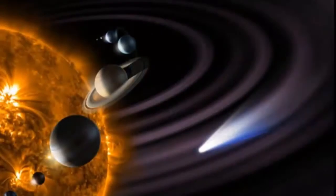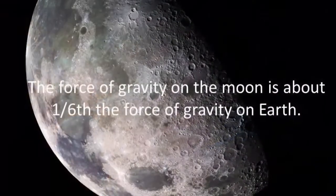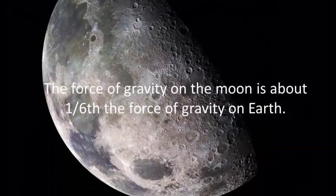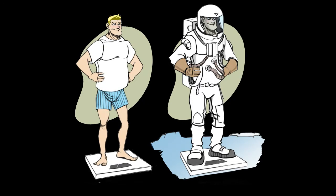Because different planets have different masses and radii, their surface gravities vary. By knowing the mass and radius of a planet, we can calculate its surface gravity. The force of gravity on the Moon is about a sixth of the force of gravity on Earth. Therefore, a person who weighs 200 pounds on Earth would weigh 33 and a third pounds on the Moon.